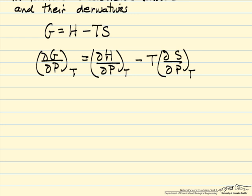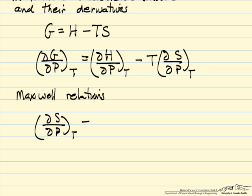Now we want to simplify this to write it in terms of other variables, because we want it in terms of measurable variables. So we're going to use one of the Maxwell relations, and this one is the partial of S with respect to pressure at constant temperature is equal to the partial of volume with respect to temperature at constant pressure. So this is one of the standard Maxwell relationships.